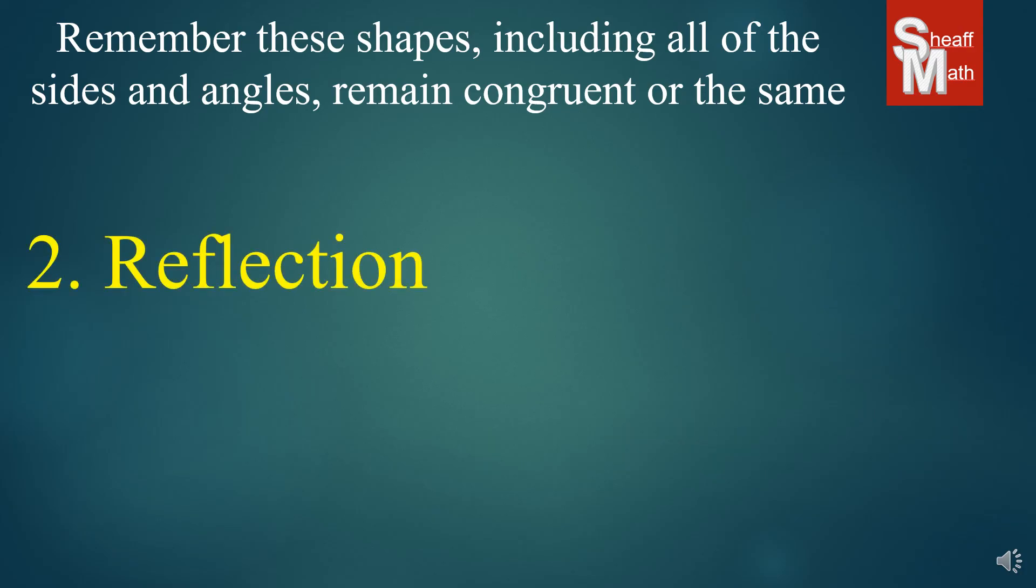The next is reflection. And you have to have a reflection line or a mirror. And that flips, flip flops across that reflection line. And again, everything is equal as far as sides and angles.